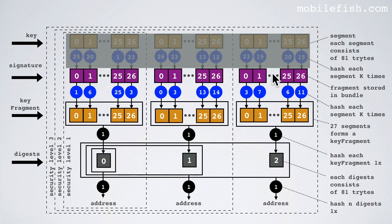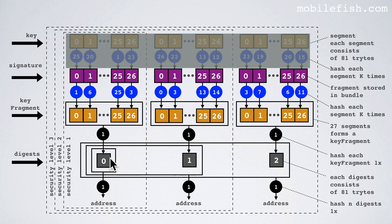Here you can see our signature. If security level is 1 then this is our signature; if security level is 2 then this is our signature; and if security level is 3 then this is our signature. Each square is a segment which consists of 81 trites and we need to hash each segment k times — that's the number we calculated previously. What we get is the key fragment. 27 segments form a key fragment. Next we hash each key fragment one time to get the digest, and each digest consists of 81 trites. If security level is 1, this digest needs to be hashed once to get the address. If security level is 3, we need to take these three digests and hash them once to get the address.